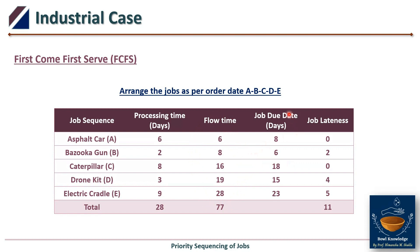We then add a job lateness column, calculated as flow time minus due date. If the result is negative, we take zero; if positive, we record the value. For example: 6−8 is negative so lateness is 0; 8−6 gives lateness of 2; 16−18 is negative so 0; 19−15 gives 4; 28−23 gives 5. Lateness equals flow time minus due date — remember this formula.